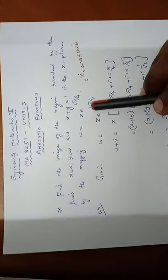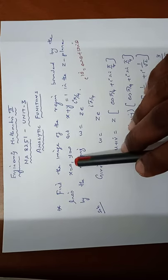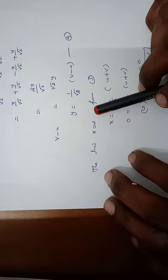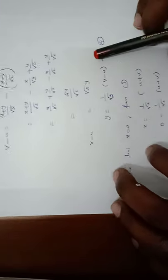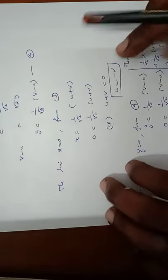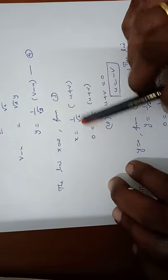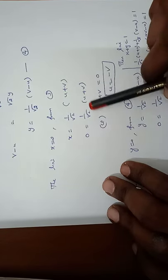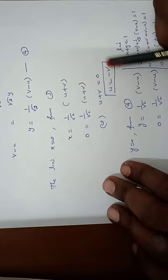Now applying the given boundary lines. The first line x equal to 0 is substituted into equation number 3: 0 equals 1 by root 2 into u plus v. This gives u plus v equal to 0, so u equal to minus v.